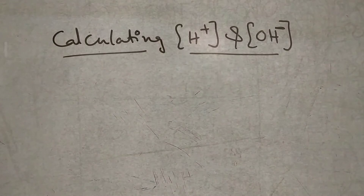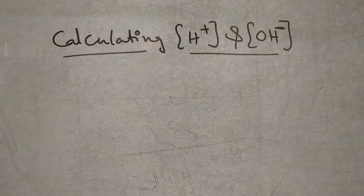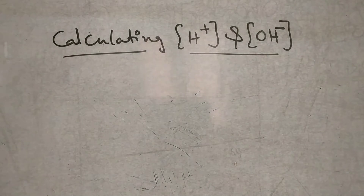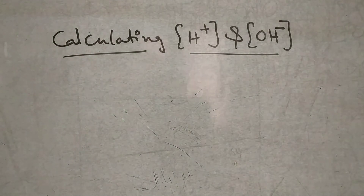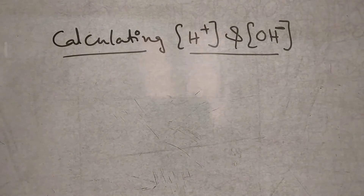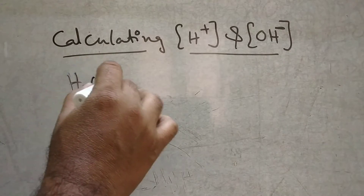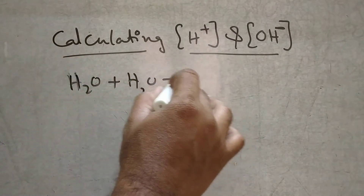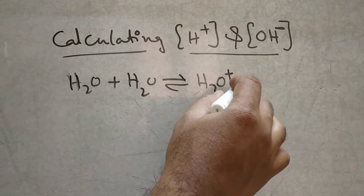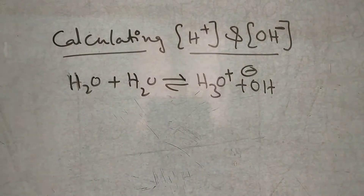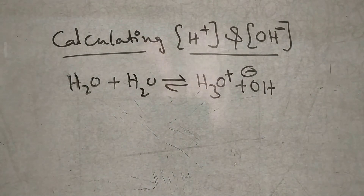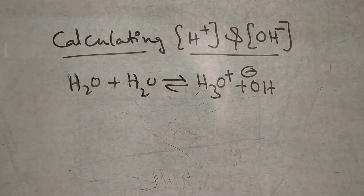Hi, this is Dr. J.M.R. Chemistry Classes. Today I am going to explain calculation of H plus ions and OH minus ions. In water, generally water undergoes auto-ionization to form H plus ions and OH minus ions. Sometimes we can call it as water self-ionization to form H3O plus plus OH minus, that is, self-ionization to form hydronium ions and OH minus ions.